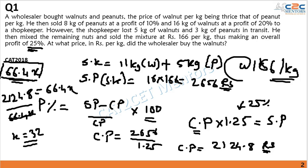We are asked for the price of walnuts at which the wholesaler bought. We assumed that is 3x, so 3 × 32 = 96 rupees. The transit losses were already accounted for in the shopkeeper's cost equation, so our answer is 96 rupees per kg.